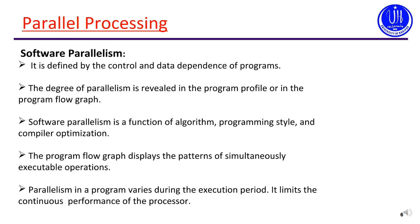Software parallelism: sometimes if we don't have good hardware, we can still achieve parallelism through software. It depends on controls and flow of data in a program. We can control the hardware using computer programming to achieve parallel processing — such type of processing is called software parallelism.